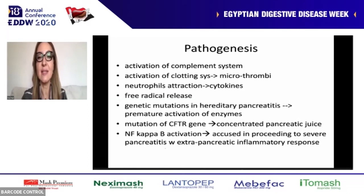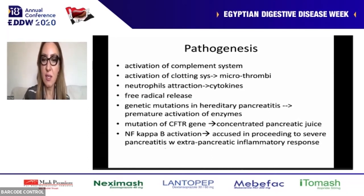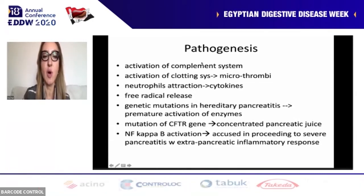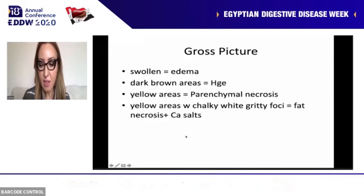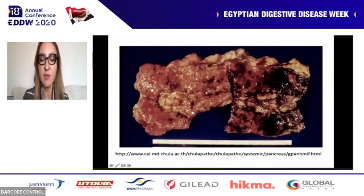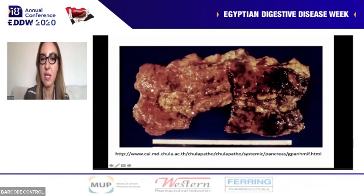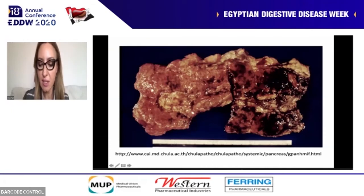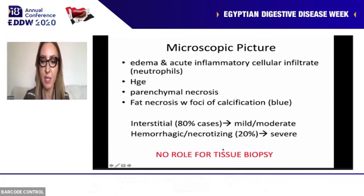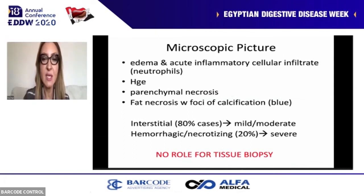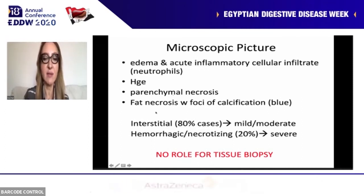The pathogenesis is not only autodigestion. Animal models show involvement of the complement system, clotting system, cytokines, free radicals, genetic mutations, and nuclear factor kappa-B activation. Grossly, acute pancreatitis shows edema of the pancreas, yellow areas of parenchymal necrosis inside, yellow areas of fat necrosis outside with white calcium deposits, and dark hemorrhagic areas. Microscopically — which should only be seen in books or post-mortem as tissue biopsy has no role — there is acute inflammation with hemorrhage, parenchymal necrosis, and fat necrosis.